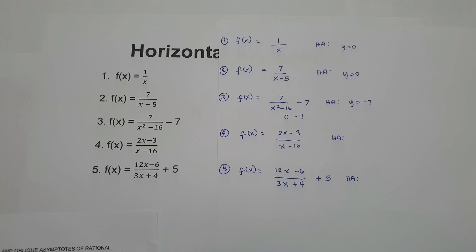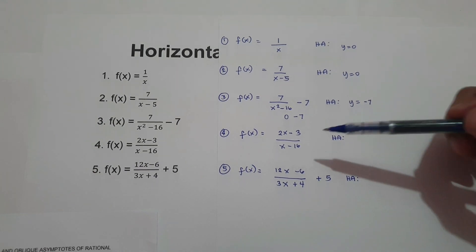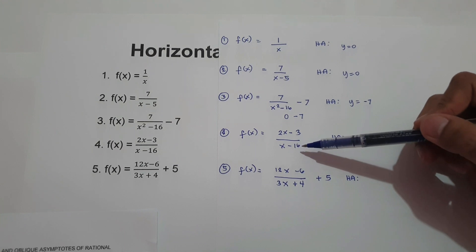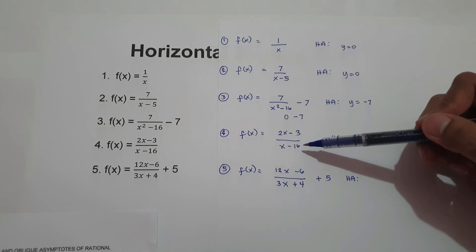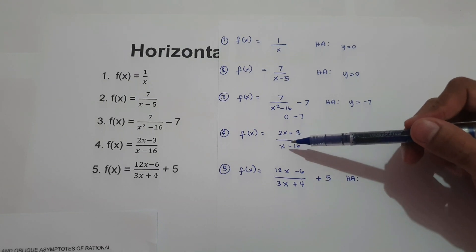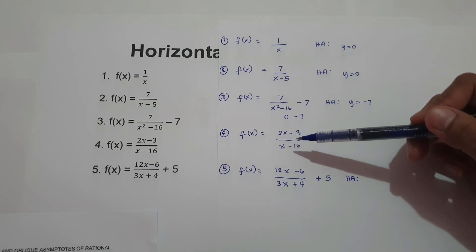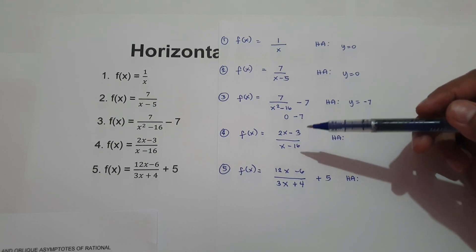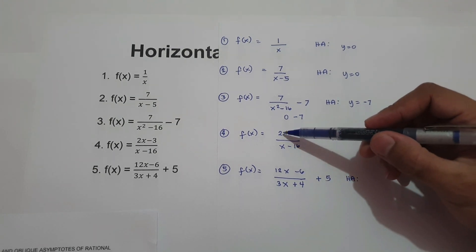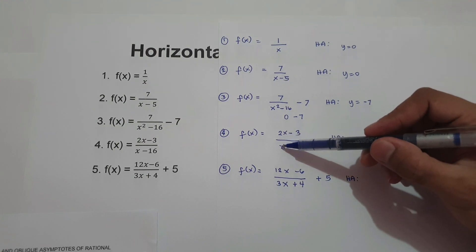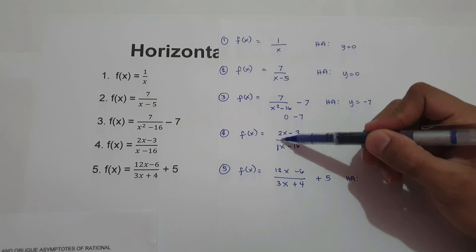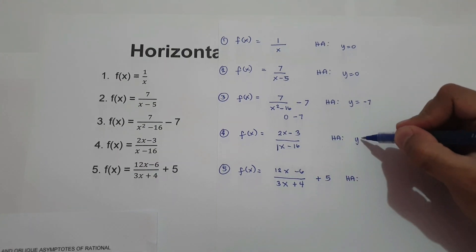Number four: f of x equals 2x minus 3 all over x minus 16. Number four falls on case number two because the degree of the numerator and the denominator are equal. Therefore, our horizontal asymptote is the ratio of the leading coefficients. The leading coefficient of the numerator is 2 and the denominator is 1. So 2 divided by 1 — our horizontal asymptote is 2.